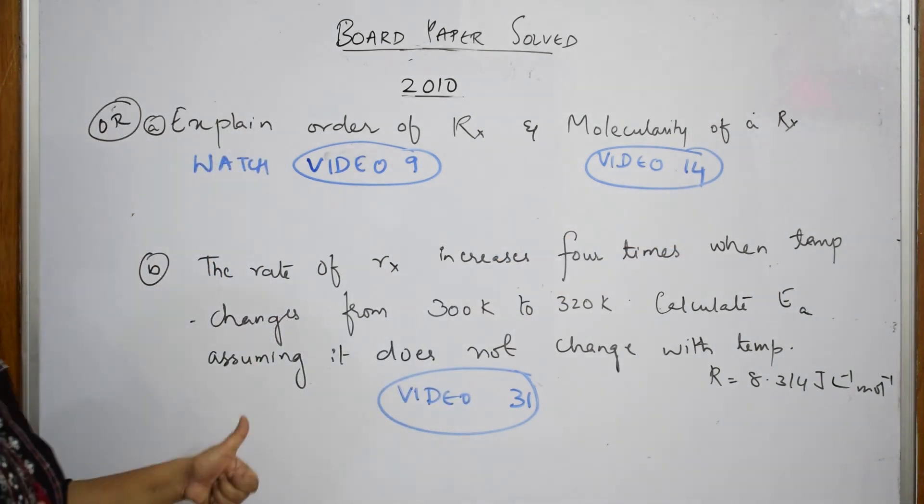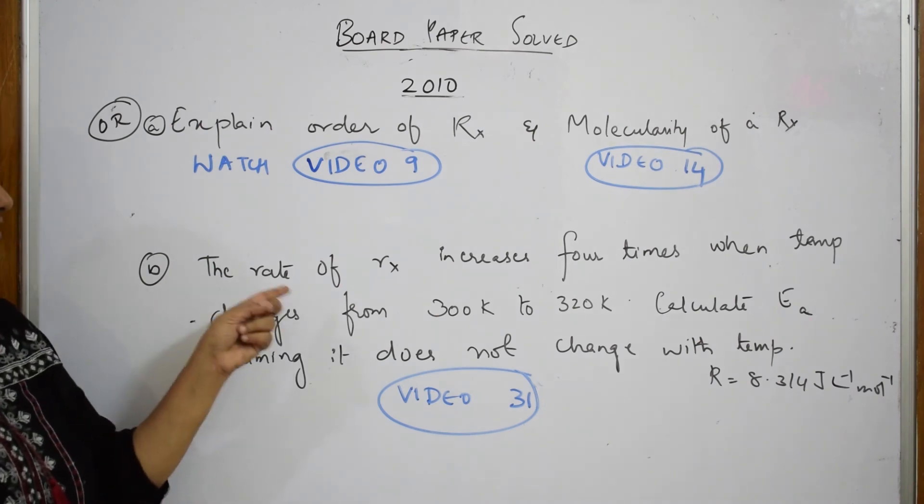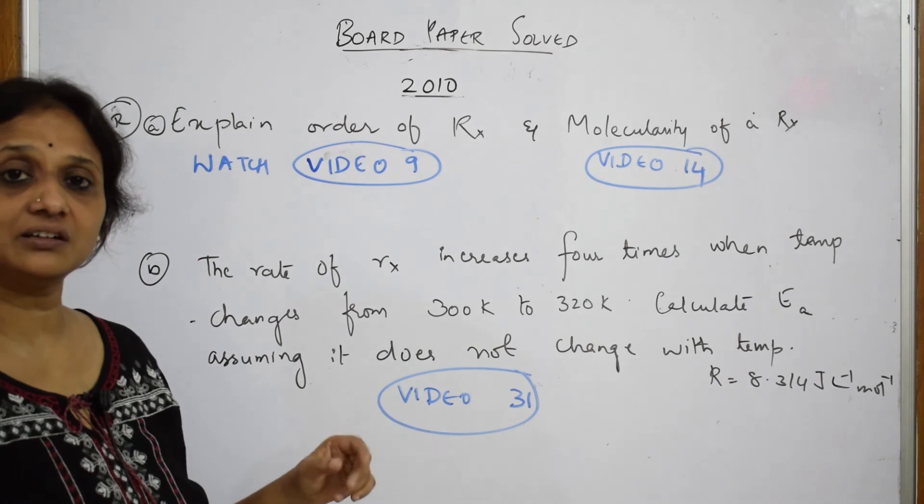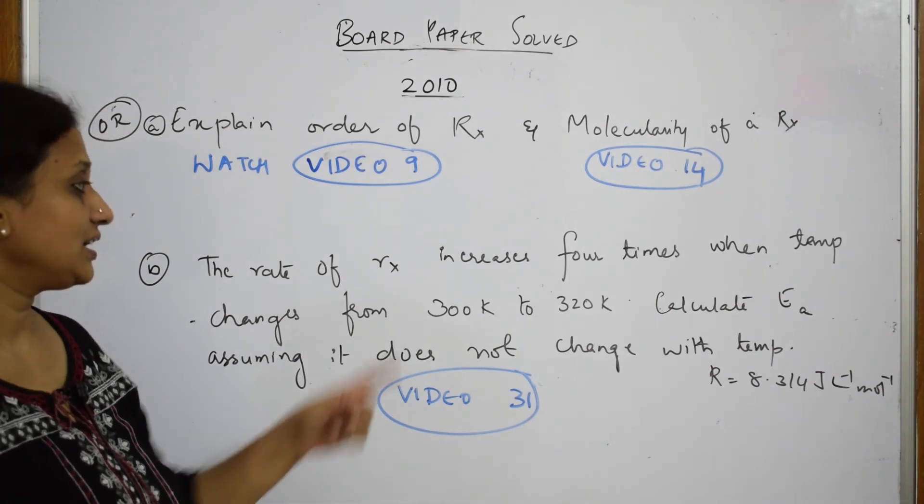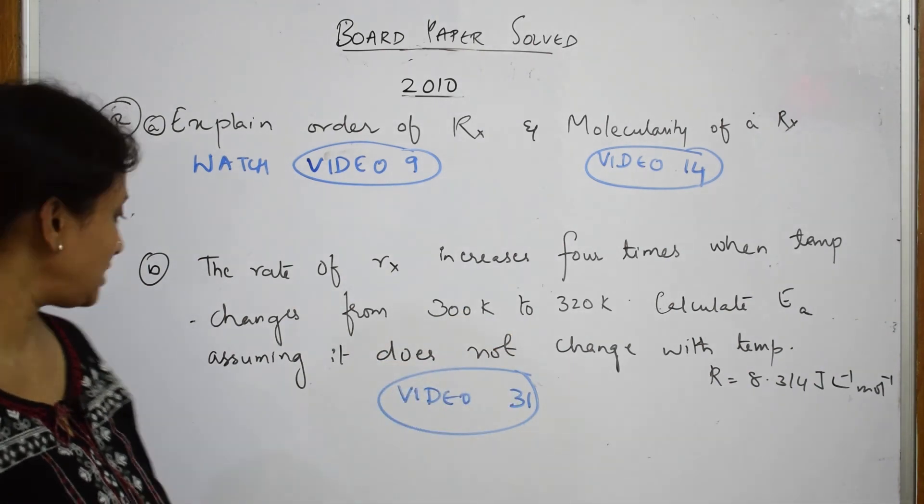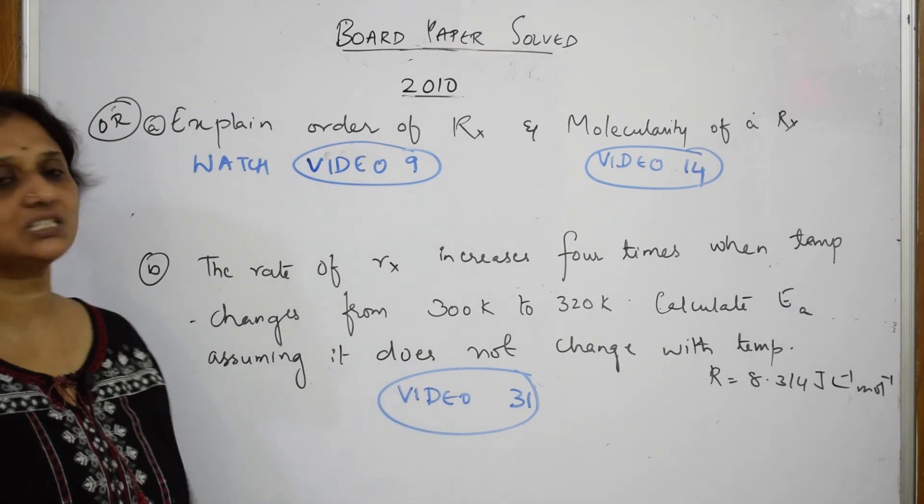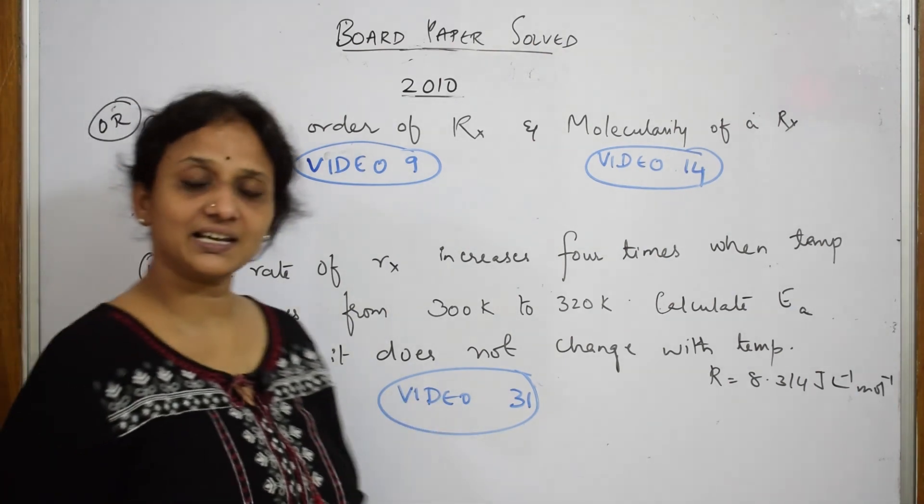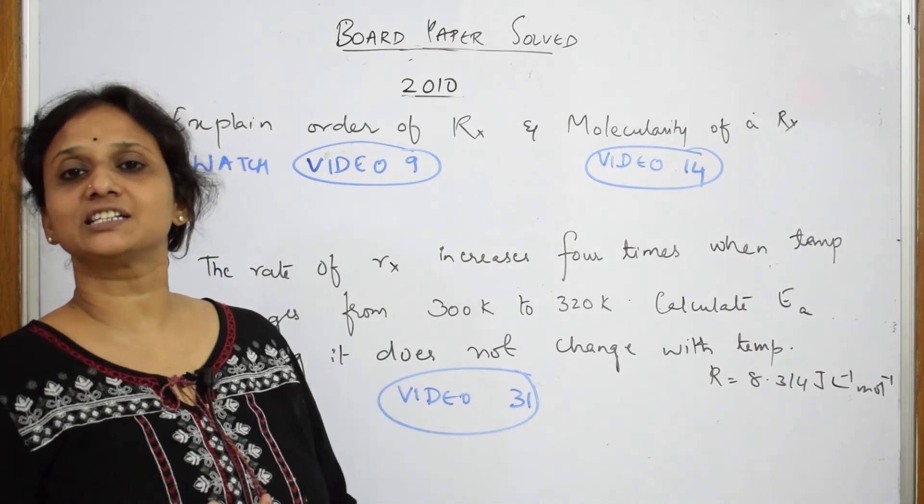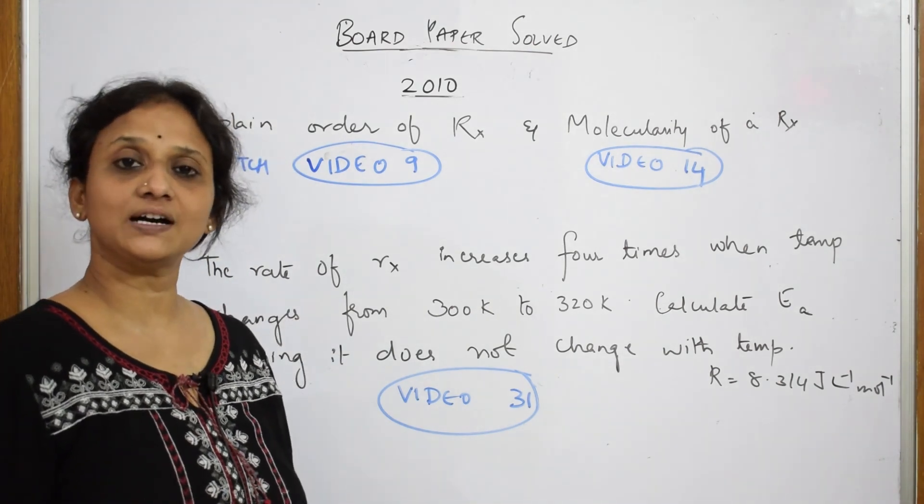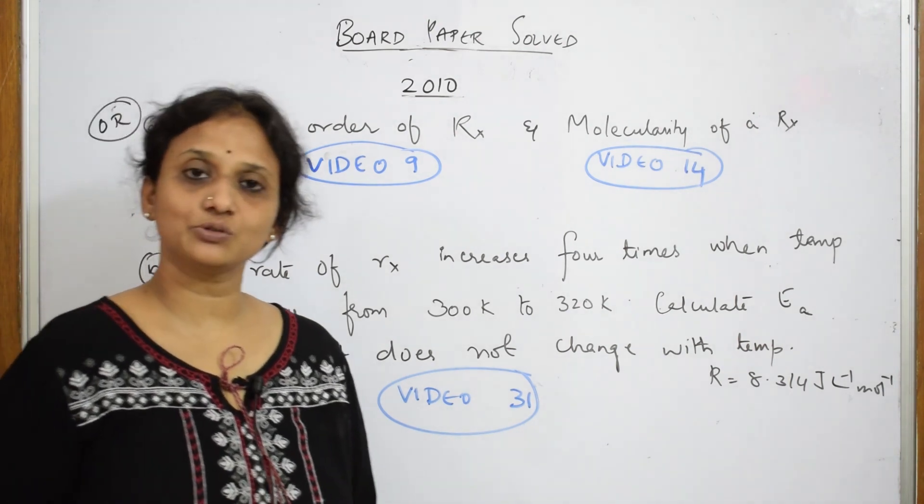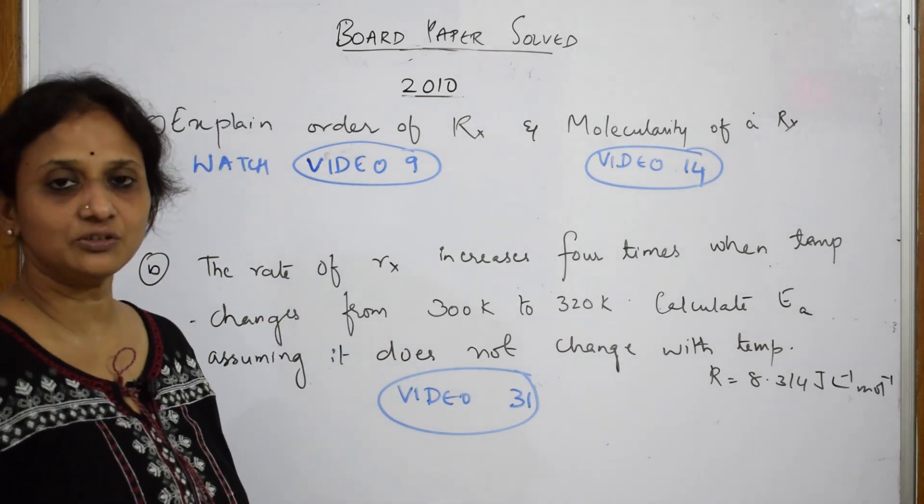Let us come back. This question also. The rate of the reaction increases four times when temperature changes from 300 Kelvin to 320 Kelvin. Calculate activation energy, assuming it does not change with temperature. I've done this question also. The same question. Just again, as I said, please go to the chemical kinetics playlist. In that playlist you have a video which is labeled as video number 31. Clear explanation is given in that video.